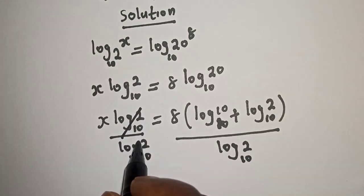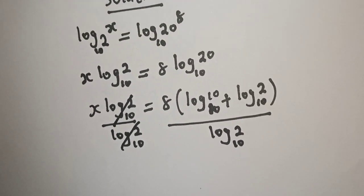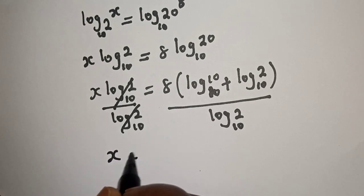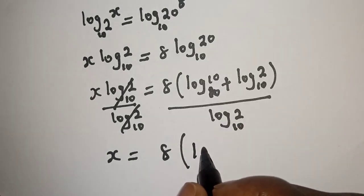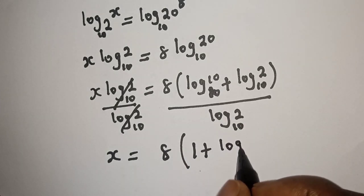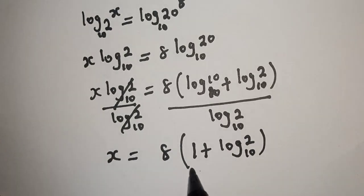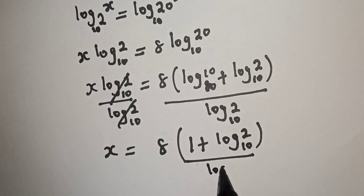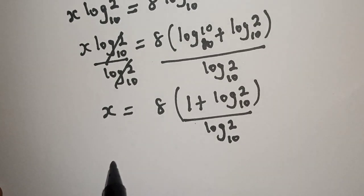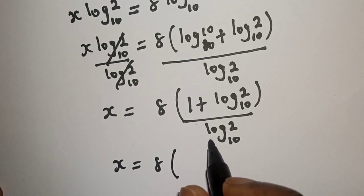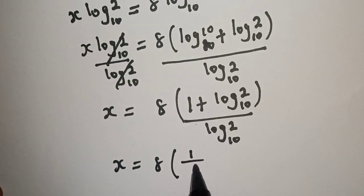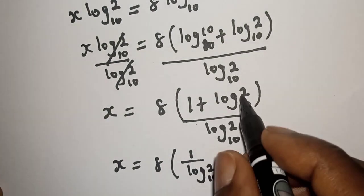Dividing by log 2 — this will cancel. So s is equal to 8 times bracket: log 10 base 10 is 1, plus log 2 base 10, all over log 2 base 10. This simplifies to s is equal to 8 times bracket 1 over log 2 base 10 plus 1.